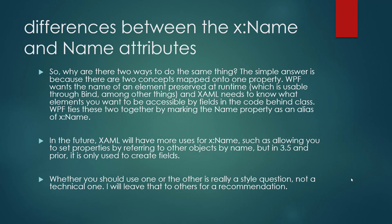So why are there two ways to do the same thing? The simple answer is because there are two concepts mapped into one property. WPF wants the name of an element preserved at runtime, which is usable through binding among other things. XAML needs to know what element you want accessible by fields in the code-behind class. WPF ties these two together by making the Name property an alias of the x:Name property.